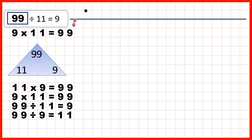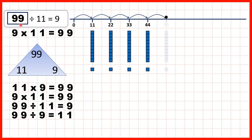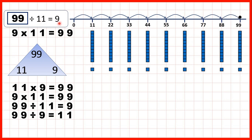We can show what we did by counting up in steps of 11 until we get to 99. The ninth jump of 11 will take us to 99, so 99 divided by 11 is 9.